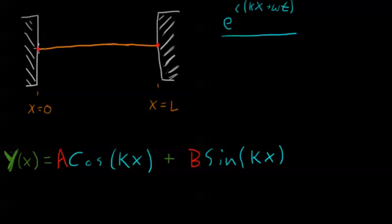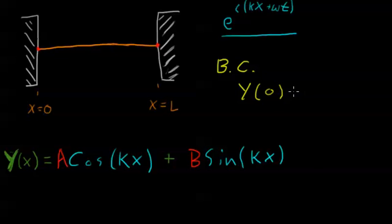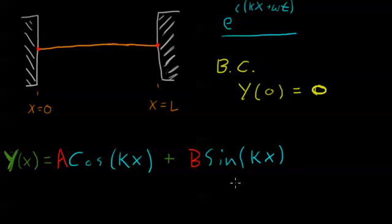Let's look at our first boundary condition. I'll write over here that our boundary conditions — I'll call them BCs. Our first boundary condition is that y of 0, so if x equals 0, we know that it has to equal 0, because this piece of string can't move. I'm defining 0 as the string has not moved; if it goes up that's positive, if it goes down that's negative y.